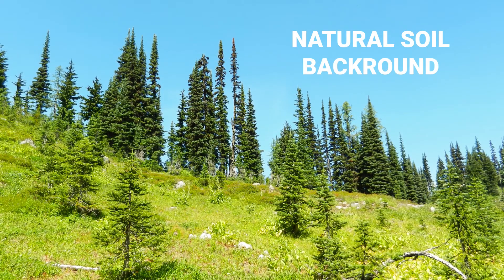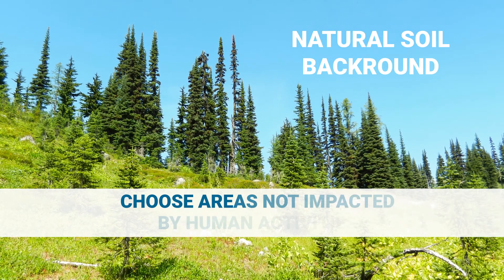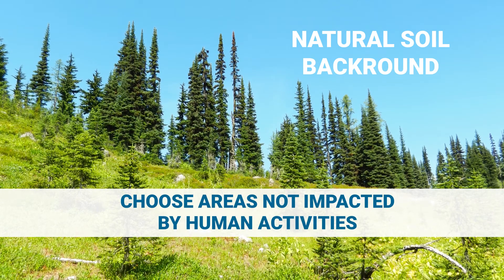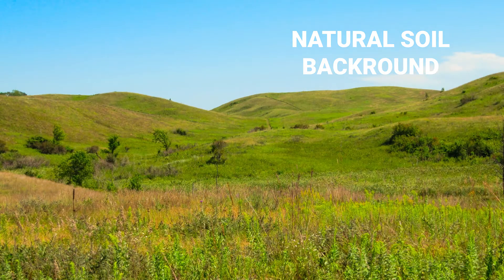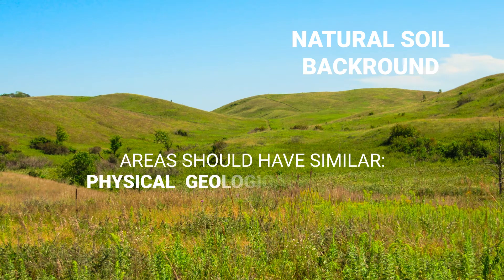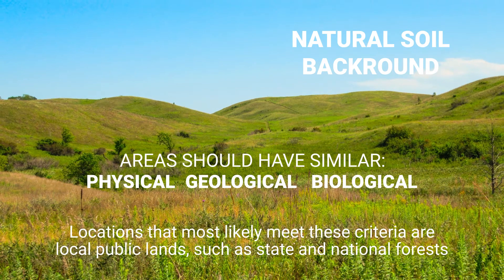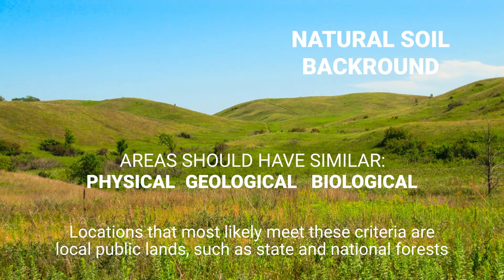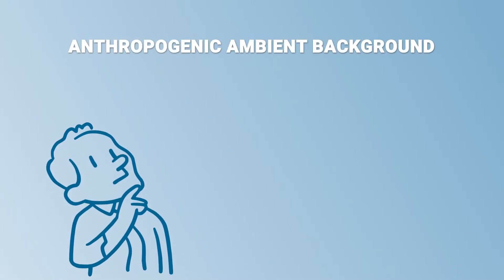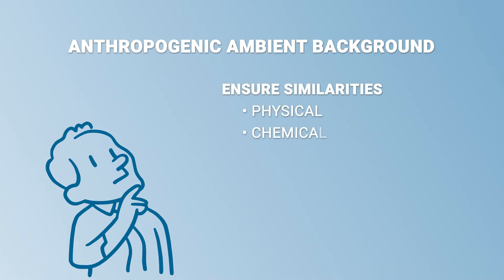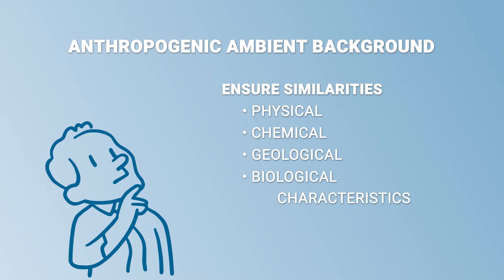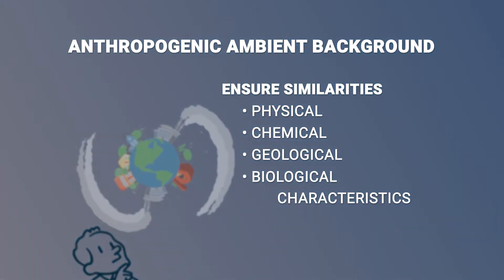When choosing locations for natural background samples, it is important to choose areas not likely to have been impacted by human activities. Natural background areas should have similar physical, geological, and biological characteristics. Locations that most likely meet these criteria are local public lands such as state and national forests. If your goal is collecting anthropogenic ambient background soil samples, the same rule applies: ensure similarities in physical, chemical, geological, and biological characteristics. These locations need to be in areas not impacted by local releases, but may have detections of chemicals at low concentrations.